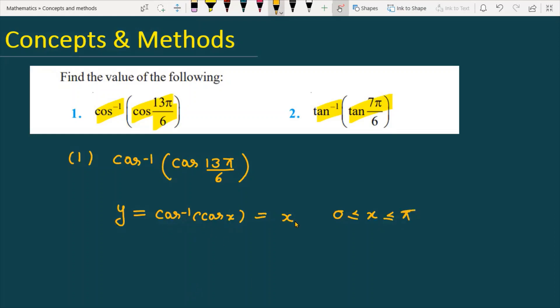You can directly replace cos inverse cos x function with x - it is an identity function - but the limit is between 0 to π. If your input is between 0 and π, then you can write it as x, otherwise you have to do further manipulation.